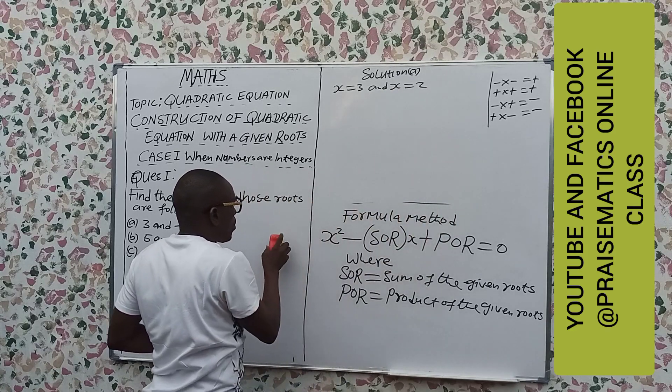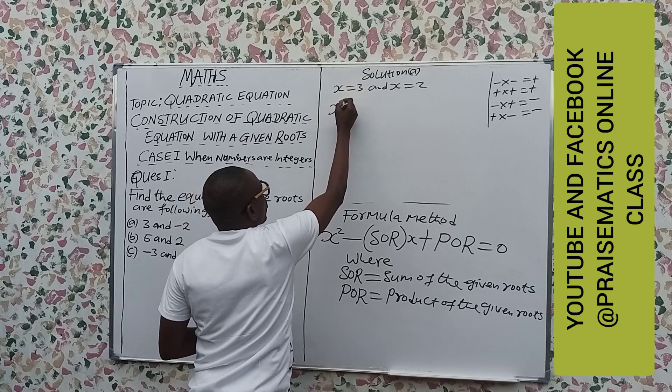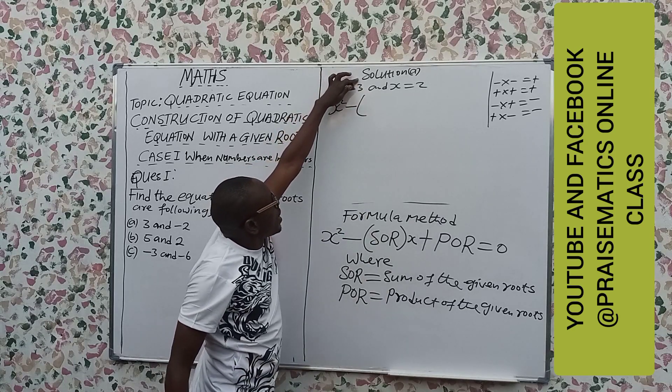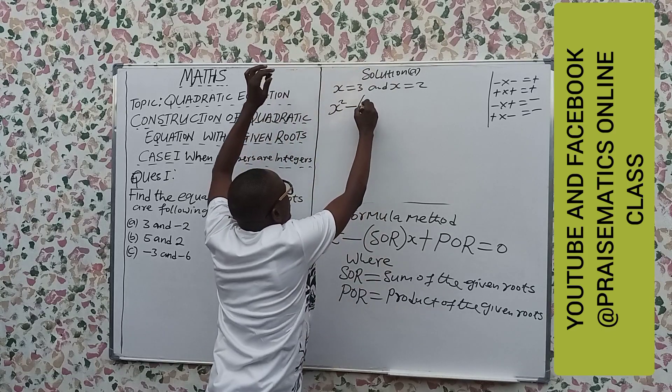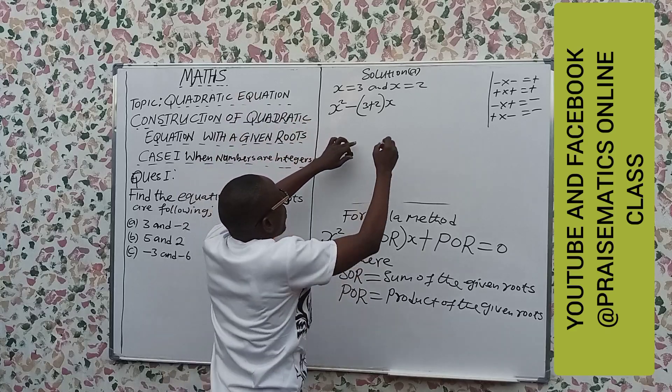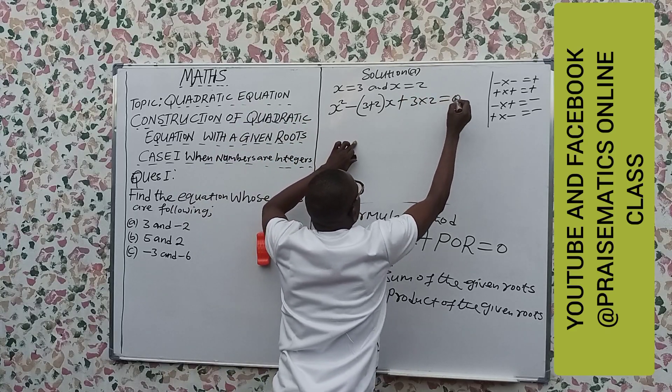Now from the formula, we have that x squared, it's always constant, x squared minus bracket, what are the roots? Roots are 3 and minus 2. We add them 3 plus minus 2, close the x as the coefficient, plus 3 times minus 2 equal to 0.